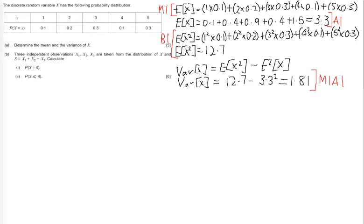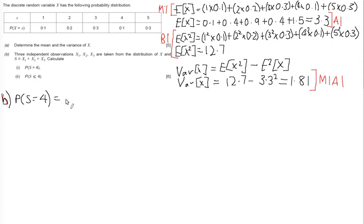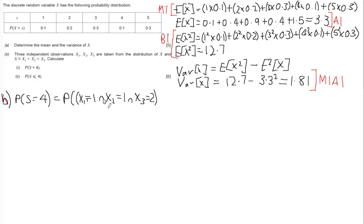Part b looks at independent observations of the discrete random variable — three independent observations x1, x2, and x3. We calculate a variable s based on adding x1, x2, and x3, and we are asked to find the probability that s equals 4. Let's think about how this can happen. One way: x1 equals 1, x2 equals 1, and x3 would then have to be equal to 2.